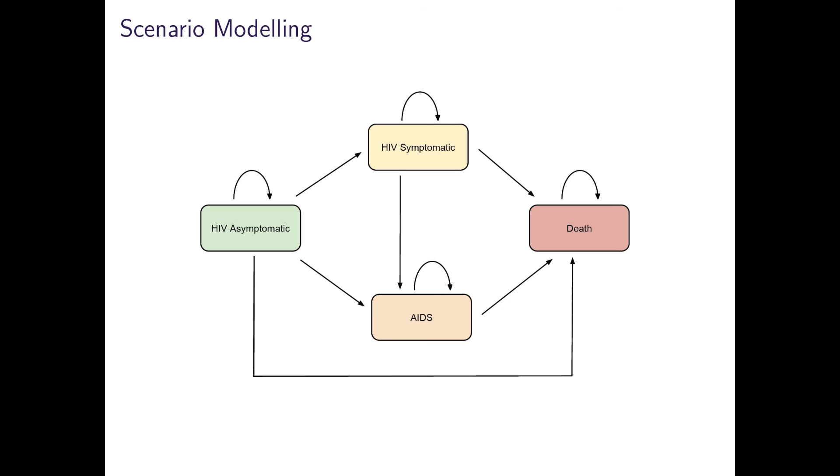One can then model whole cohorts of populations over time, looking at the distribution amongst the states that the population of the cohort will be in after a certain amount of time ahead. We can also add in costs to capture resource needs over time and model interventions.